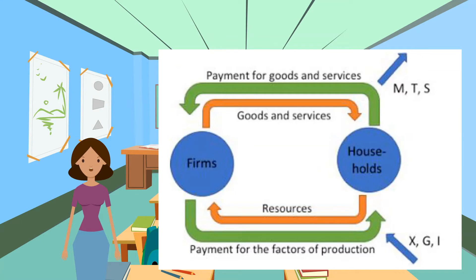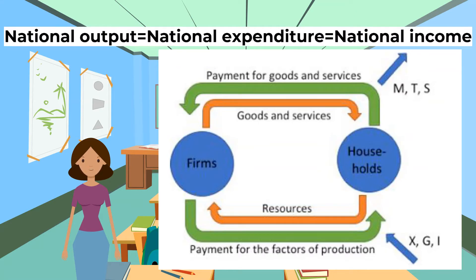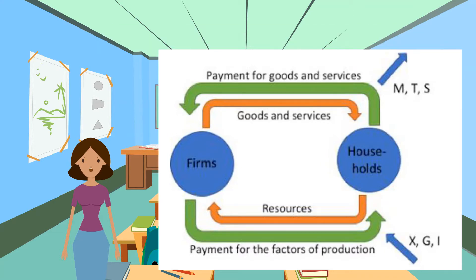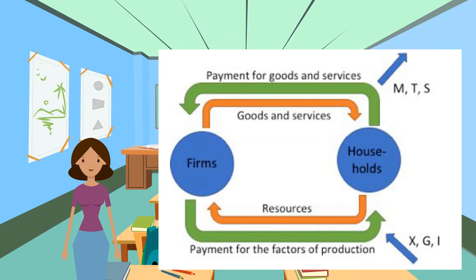In this simple model, national output equals national expenditure, which equals national income. However, the two-sector model is too simplified to represent the actual economy. Firstly, the government needs to be added — they take money out of the economy through taxation, shown by T.